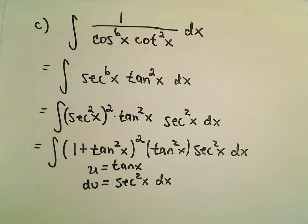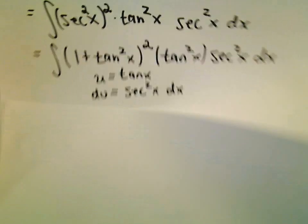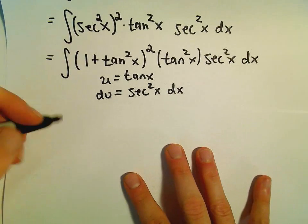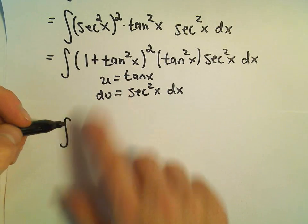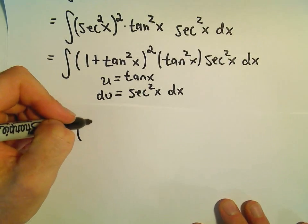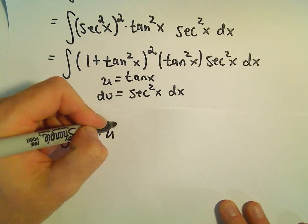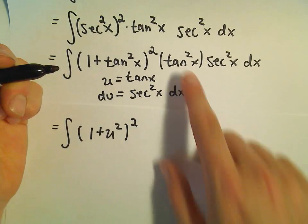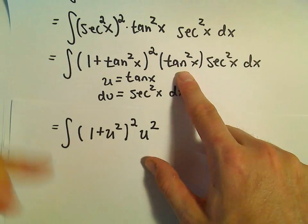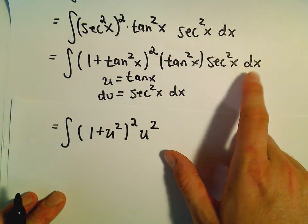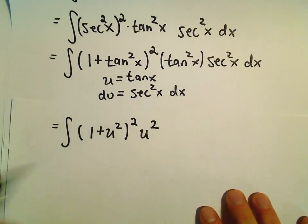Now it's just a matter of getting a polynomial function and integrating it. We'll replace all the tangents with u's. So we have 1 plus u squared squared, another u squared, and then secant squared x dx, which we replace with du.